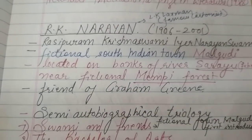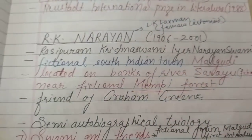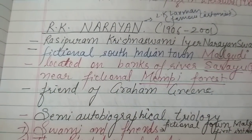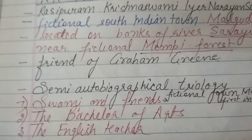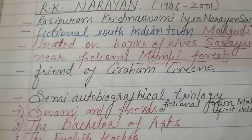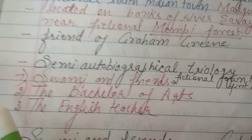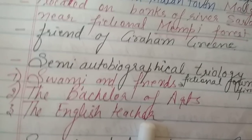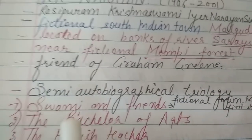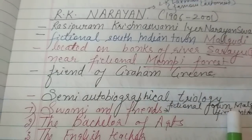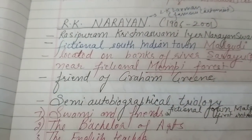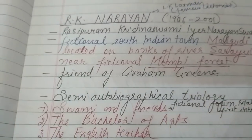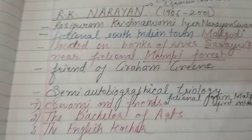R.K. Narayan wrote three semi-autobiographical trilogies. The novels are Swami and Friends, The Bachelor of Arts, and The English Teacher. Swami and Friends deals with his childhood days, The Bachelor of Arts deals with adolescent age, and The English Teacher deals with his post-marriage life.